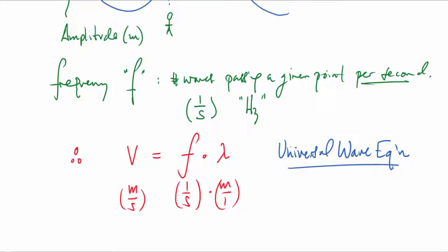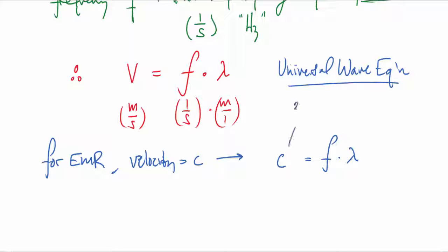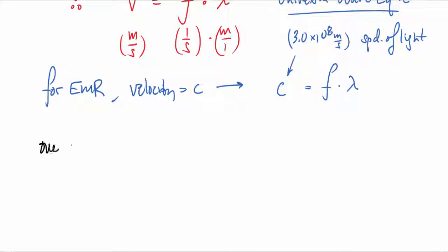If we're talking about electromagnetic radiation, then the velocity is equal to the speed of light c, so we get c equals f times lambda, where c is 3 times 10 to the 8 meters per second. That's the speed of light, f is the frequency, and lambda is the wavelength.